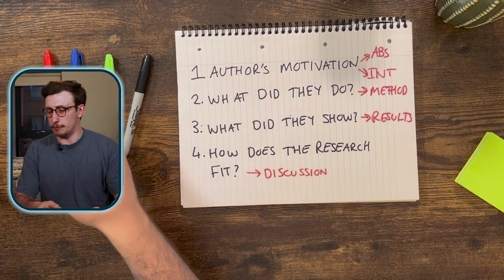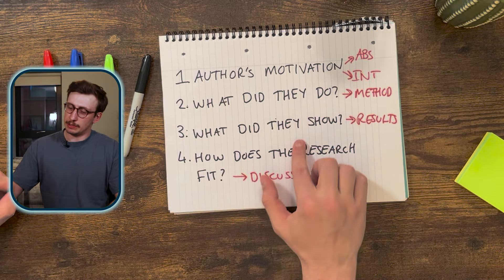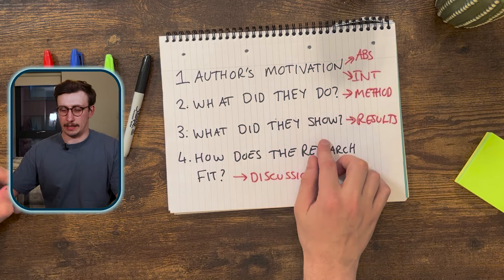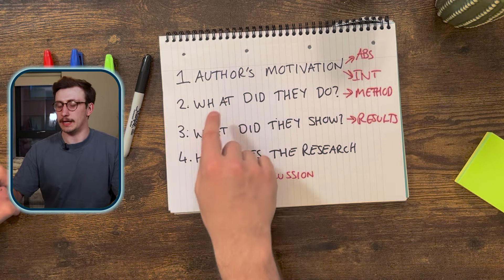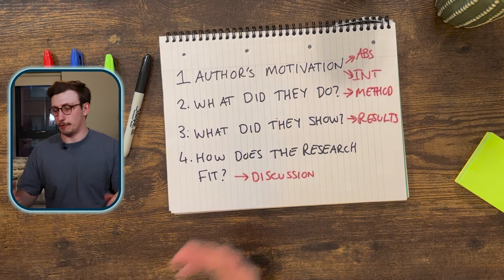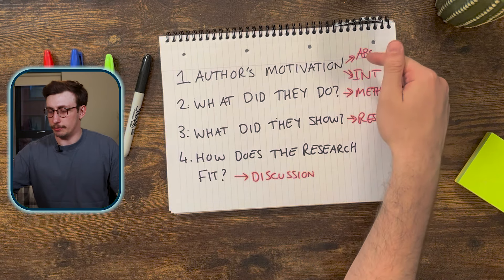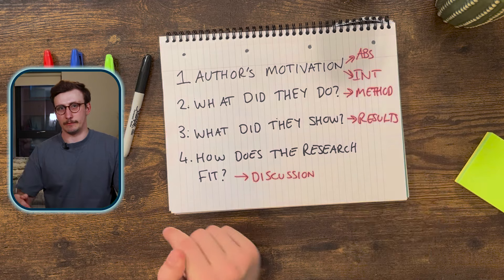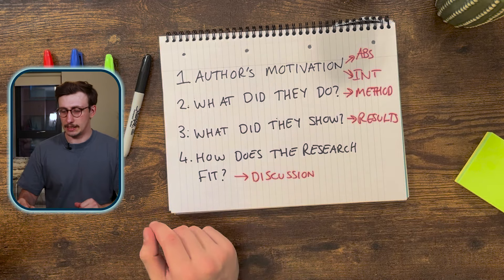An easy mistake would be to read a paper from start to finish like a book — reading the abstract, introduction, methods, and then results in order to build context. But you don't want to read papers that way. There is actually an optimized order that best allows us to understand what the author is trying to show.